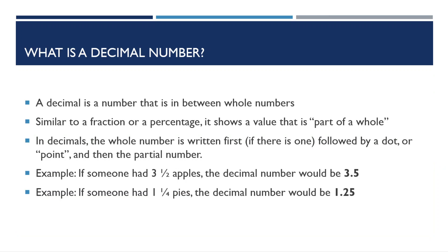So what is a decimal number? When we're talking about decimals, we're talking about a number that is in between whole numbers. It's similar to a fraction or a percentage in that it shows a value that is part of a whole. When we look at a decimal number, we can see that the whole number is written first. If there is one, sometimes decimal numbers are less than one. And that number is followed by a dot, which is also called a point, and then the number or numbers that represent the partial value.